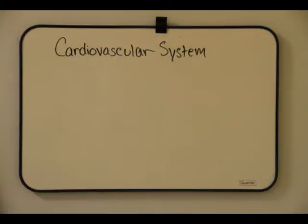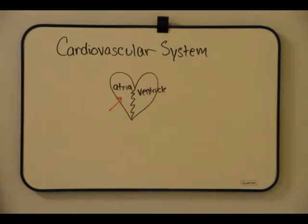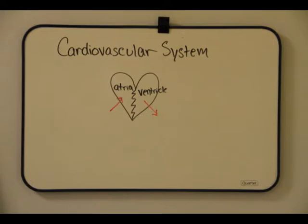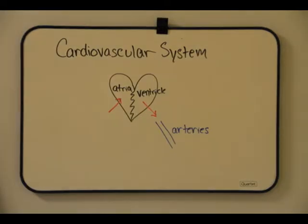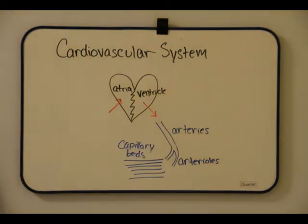The cardiovascular system is another way to refer to the closed circulatory system in vertebrates. Vertebrate hearts have atria, chambers that receive blood, and ventricles, chambers that pump blood out of the heart. Arteries carry blood away from the heart and branch into arterioles, which then branch into smaller capillaries.